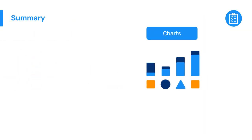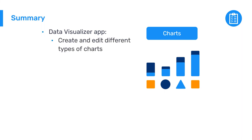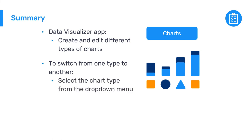To summarize, the Data Visualizer app in DHIS2 allows you to create and edit different types of charts depending on the type of data analysis you want to perform. To switch from one type of chart to another, simply select the chart type from the drop-down menu and adjust the layout and options to achieve the desired visualization.